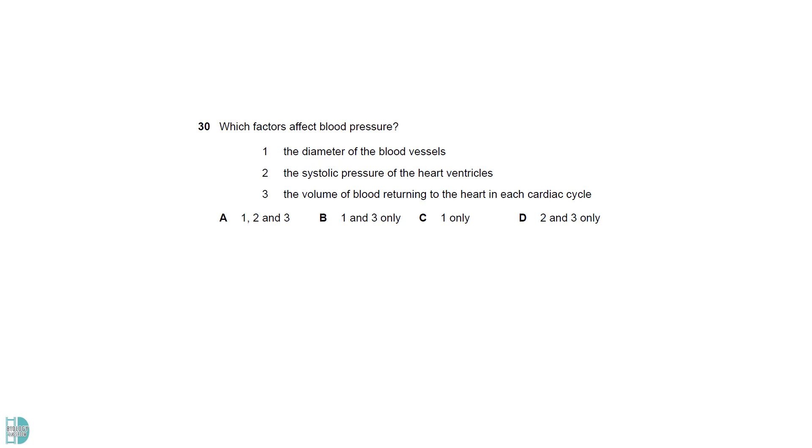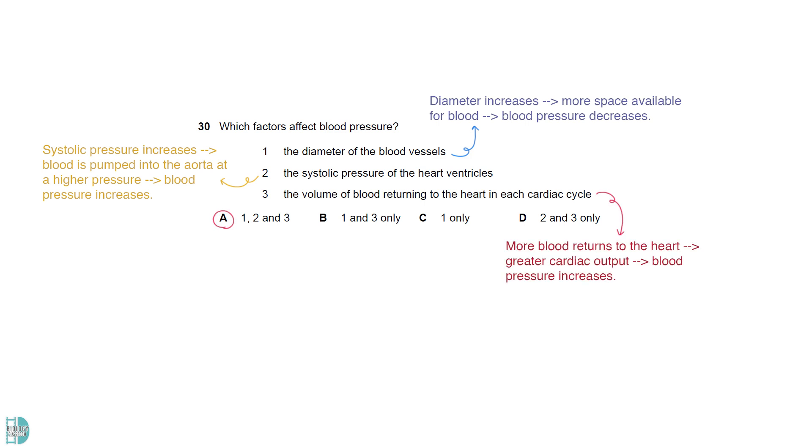When the diameter of the blood vessels increases, more space is available for blood. The blood pressure will decrease. If the systolic pressure increases, blood is pumped into the aorta at a higher pressure, causing an increase in blood pressure. If more blood returns to the heart, cardiac output will be greater. This leads to an increase in blood pressure.